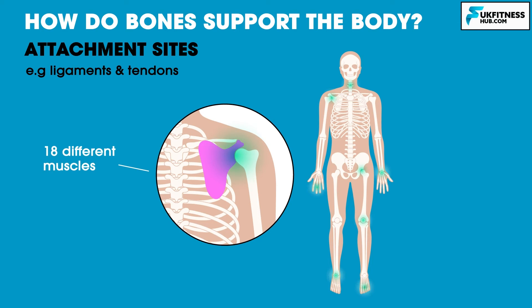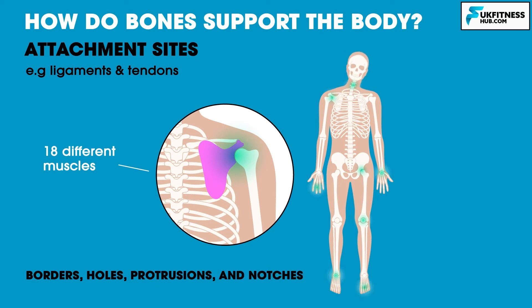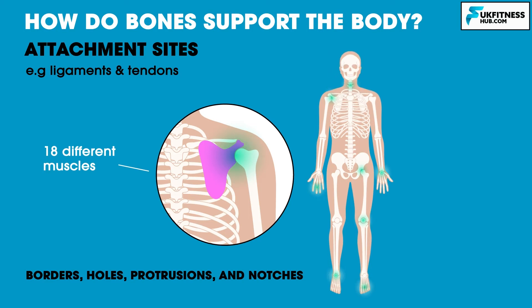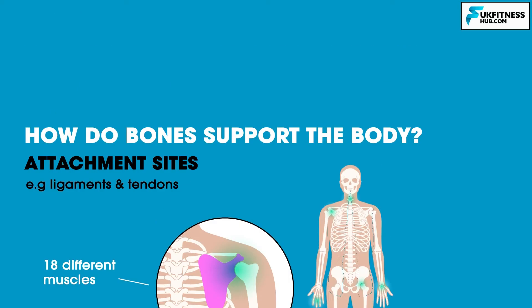Bone attachment points can be described as borders, holes, protrusions, and notches. Finally, the skeleton provides levers for movement. When a muscle contracts, it pulls on bone, and together they work to provide movement.